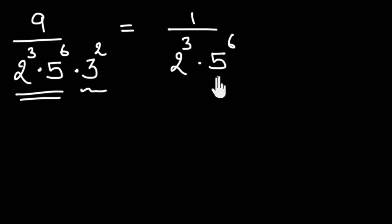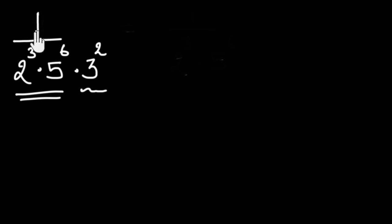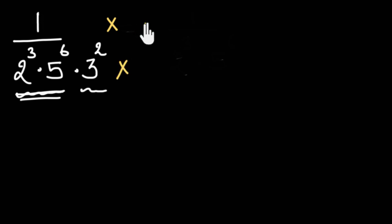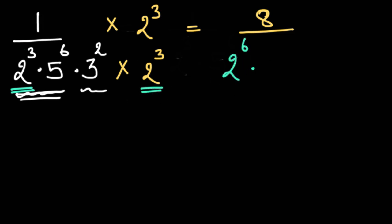There might be a possibility that on dividing numerator and denominator by a common number, the extra prime factor goes away. That's why we always look for the simplest form. But let's say even in the simplest form we had an extra factor — for example, instead of 9 in the numerator, we had 1. Now let's focus on 2s and 5s: we have three 2s and six 5s. To get equal numbers, we can multiply numerator and denominator by 2 cubed, which gives us 8 in the numerator. The 2 cubed terms combine to give 2 to the power 6 times 5 to the power 6 times 3 squared.